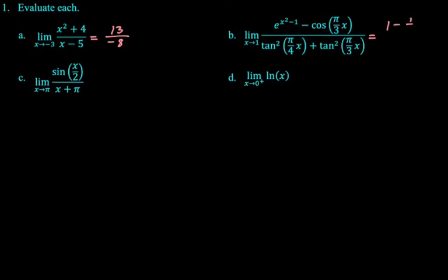So minus 1 half over the tangent of pi over 4 is 1, and squared you get 1. The tangent of pi over 3 is radical 3, and squared you get 3. So we get 1 half over 4 or 1 eighth. And that's it.